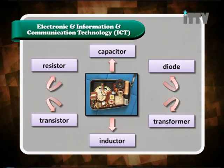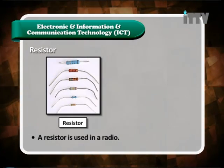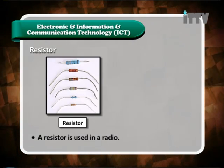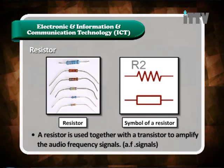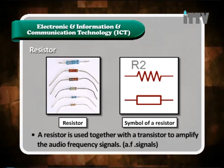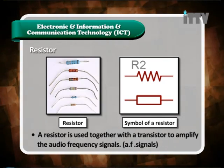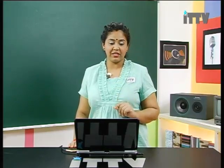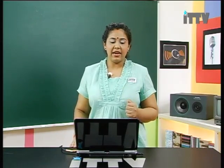Let's learn in detail, starting from the resistor. Here is an example of resistor devices and the symbol of a resistor. A resistor is used together with a transistor to amplify the audio frequency (AF) signal. So a resistor together with a transistor amplifies the AF signal — that is the function of the resistor.